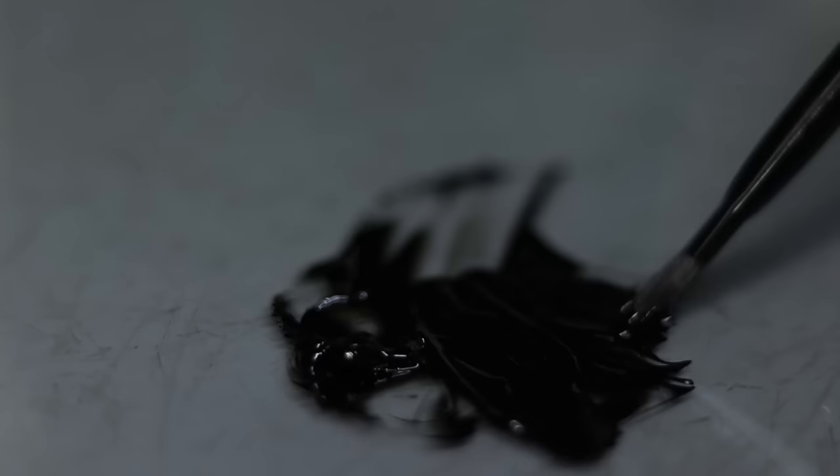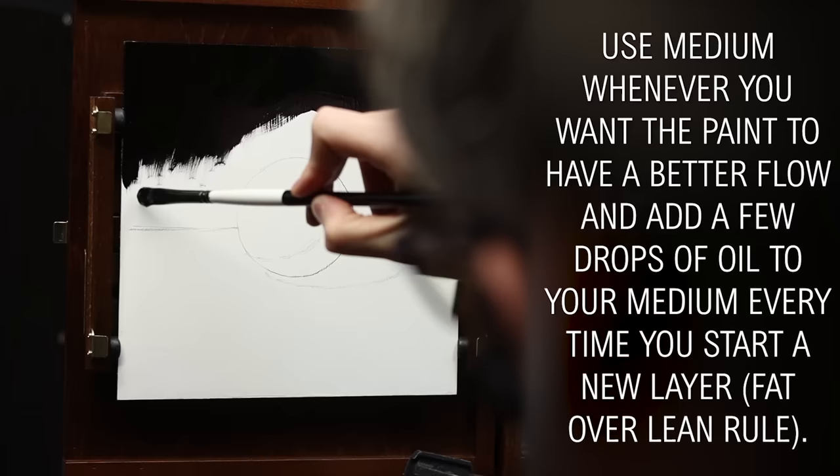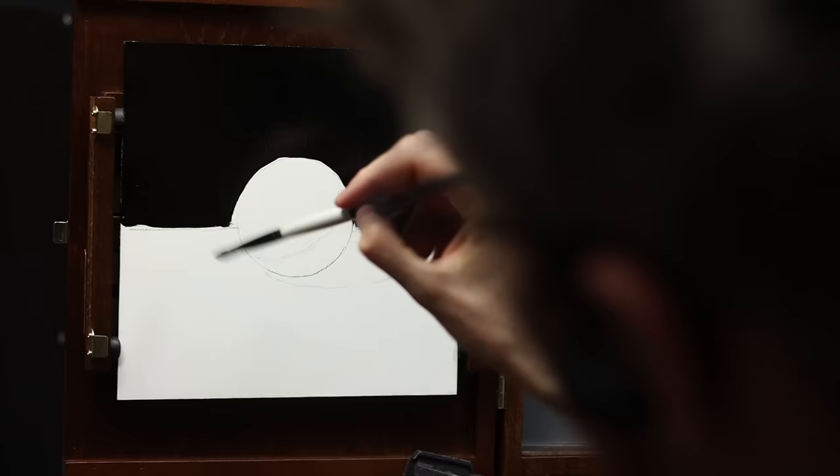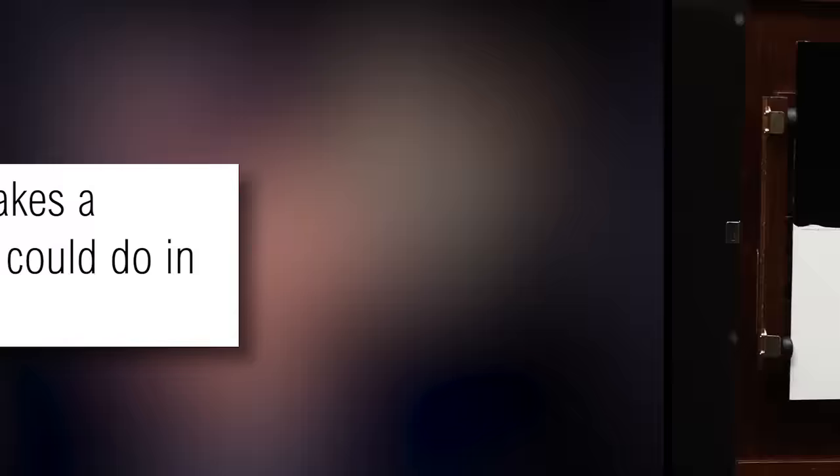To keep things simple — are mediums optional? In theory, yes. If you don't want to use any medium and you like the consistency of the paint straight out of the tube, you don't have to use one. In practice, it's hard to go without any medium, because when you want to paint multiple layers and want a little bit more fluidity for your paint, simply add a few drops of oil to your medium every time you want to start a new layer. There are way more complicated things you can do with mediums, using resins, using dryers — you can check out other videos on my channel if you want to learn more.